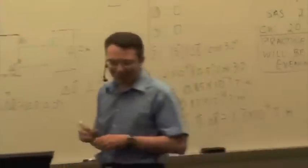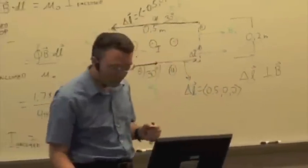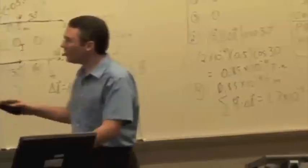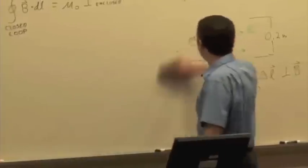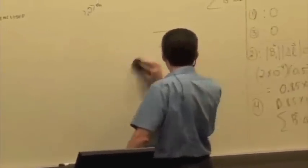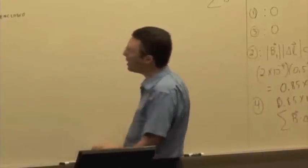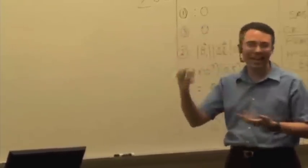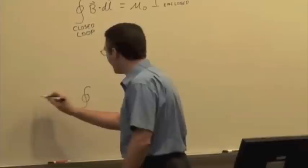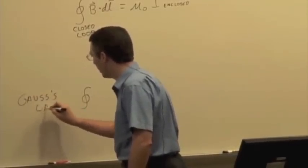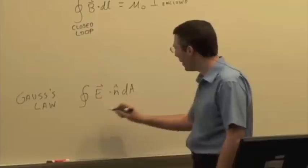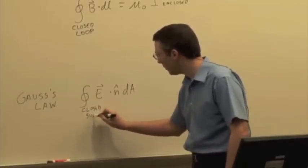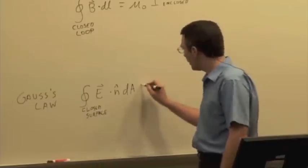I'm going to stop there with chapter 22 and we're going to move on. Let's take a look at what we've seen so far over the past chapter. We have Ampere's Law, which relates this curly pattern of magnetic field to current enclosed by a circular loop. We also have Gauss's Law, which relates the pattern of electric field over an area — the electric flux of a closed surface — to the charge enclosed.